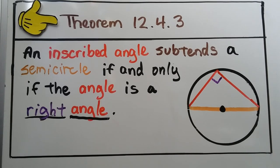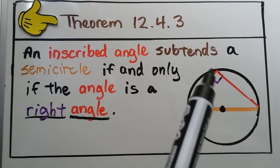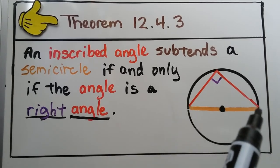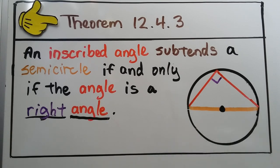Back to our theorem and our diagram here, we can see that this inscribed angle has its endpoints right here. So we would have this arc or we would have this chord.